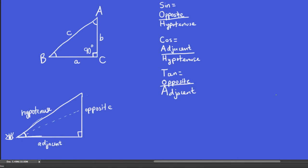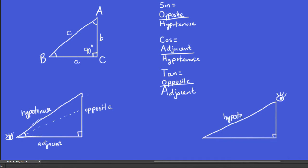Now let's say I draw another triangle — kind of the same one — but this time I decide to look from this other angle instead. When I decide to look from this angle, what are the three sides called? Well, this side is still the hypotenuse — that doesn't change. But since I'm looking from this angle now, over here is the opposite side, and the other one, which is beside it, which is adjacent to it, is called the adjacent side.